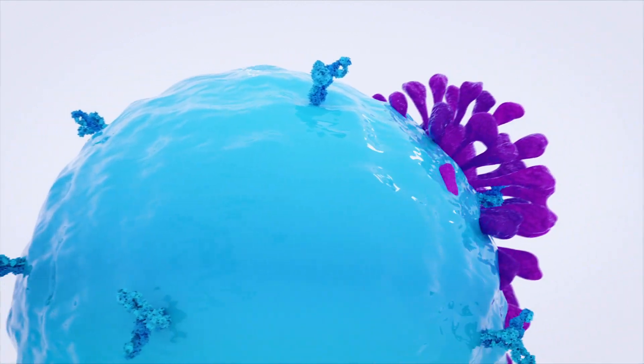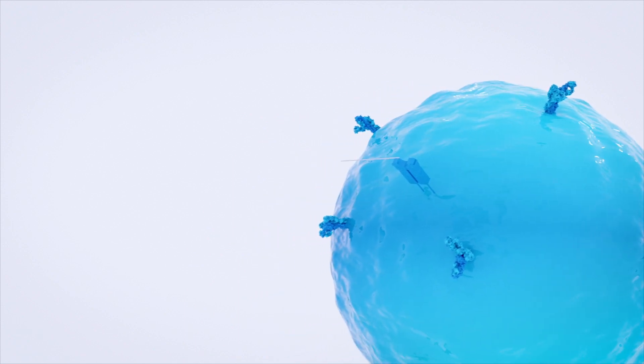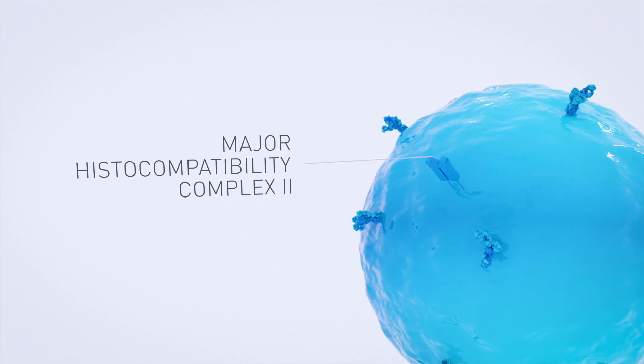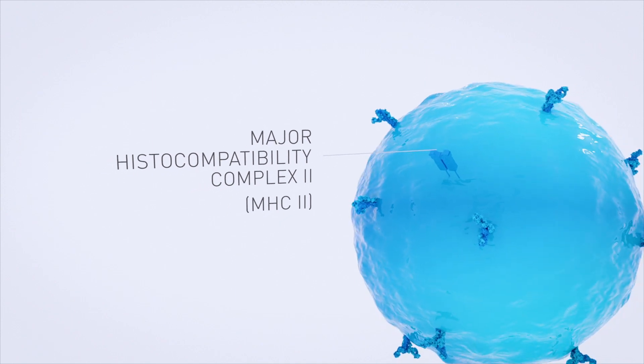Once bound, the antigen is ingested and broken down inside the B cell, with the resulting product placed on the surface of the B cell, known as Major Histocompatibility Complex 2 or MHC2.